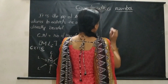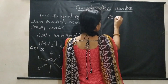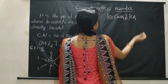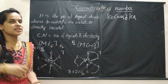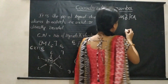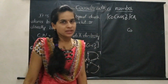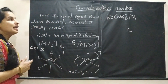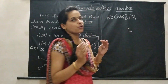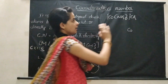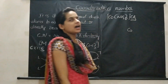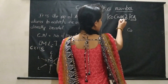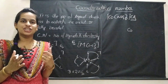Let me consider an example. First, let us consider [Co(NH3)6]Cl3. Coordination number is calculated for the ligands in the inner coordination entity or coordination sphere. The ions present outside the coordination sphere are termed as counter ions. While calculating the coordination number, just look at the ligands or ions present in the coordination sphere.